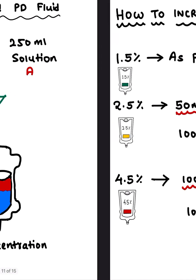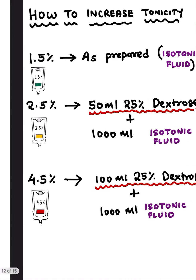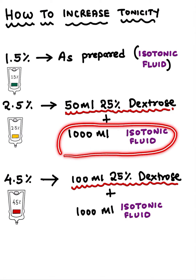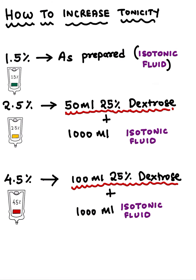If we want to increase the concentration and make it 2.5%, we take 1000 ml of the isotonic 1.5% PD fluid and add 50 ml of 25% dextrose — that gives us a 2.5% PD fluid. If we want to make it 4.5%, to the same 1000 ml of isotonic 1.5% fluid we add 100 ml of 25% dextrose. It's that easy.